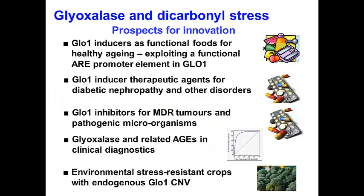In the future, there are now great prospects for the glyoxalase field. Glyoxalase 1 inducers are being developed as functional foods exploiting the functional antioxidant response promoter element, and as therapeutic agents for diabetic nephropathy and other disorders. Glyoxalase 1 inhibitors are being developed for treatment of multidrug-resistant tumors and pathogenic microorganisms. Glyoxalase and related advanced glycation end products are being exploited for clinical diagnostics. And natural copy number variation of glyoxalase 1 found in some crop plants will provide for environmental stress-resistant crops and aid food security. So in the future, we're likely to see important developments for improvement of health, treatment of disease, and security of food supplies from glyoxalase research.